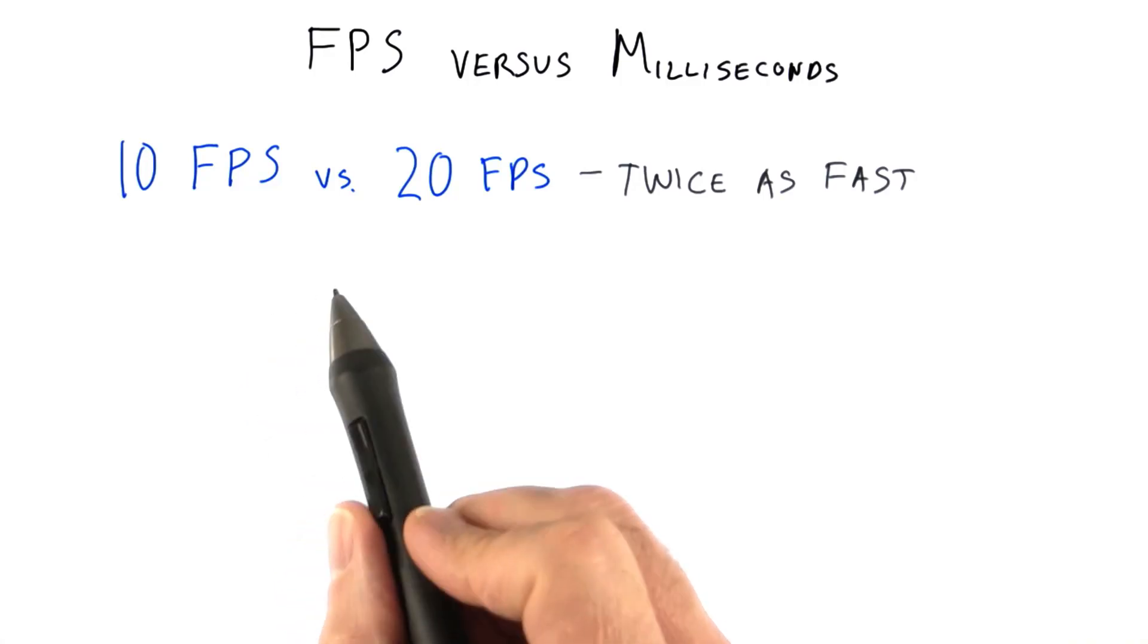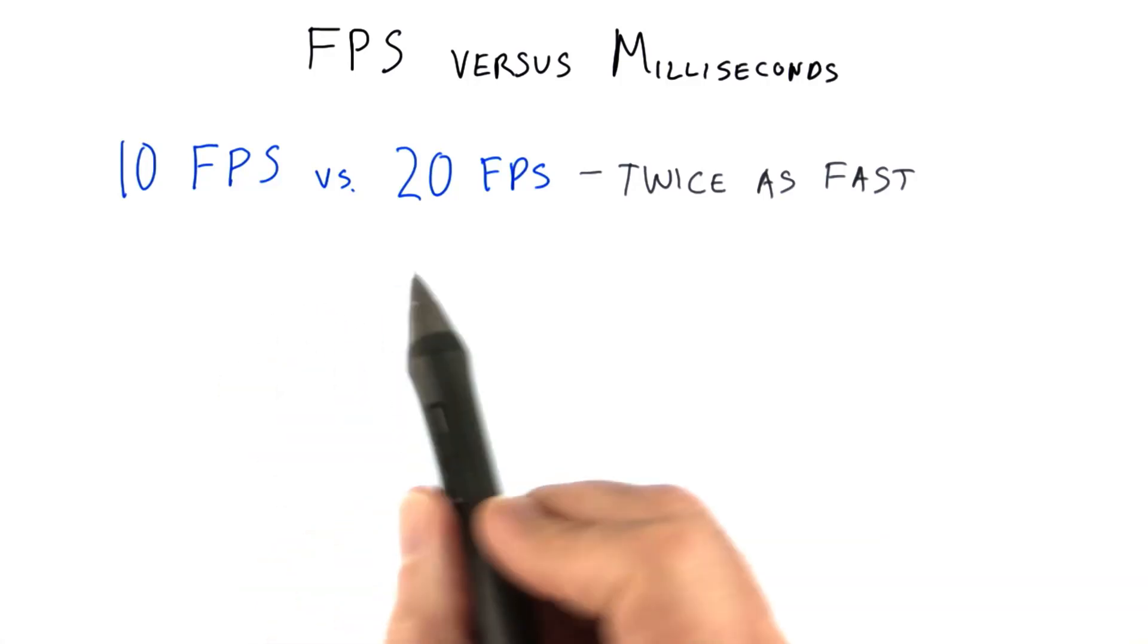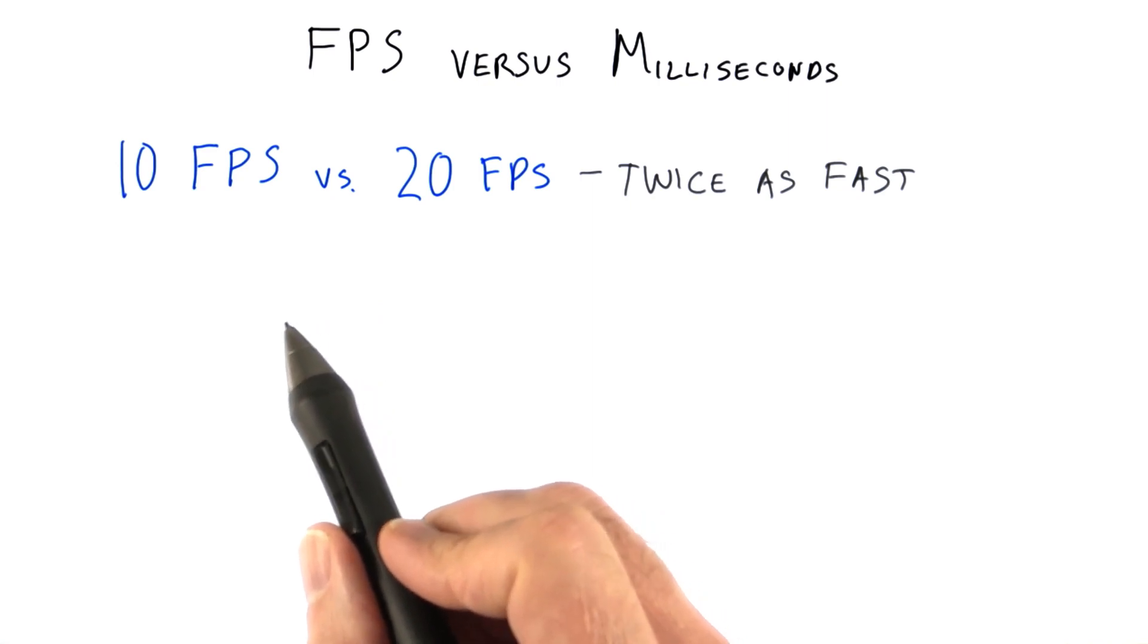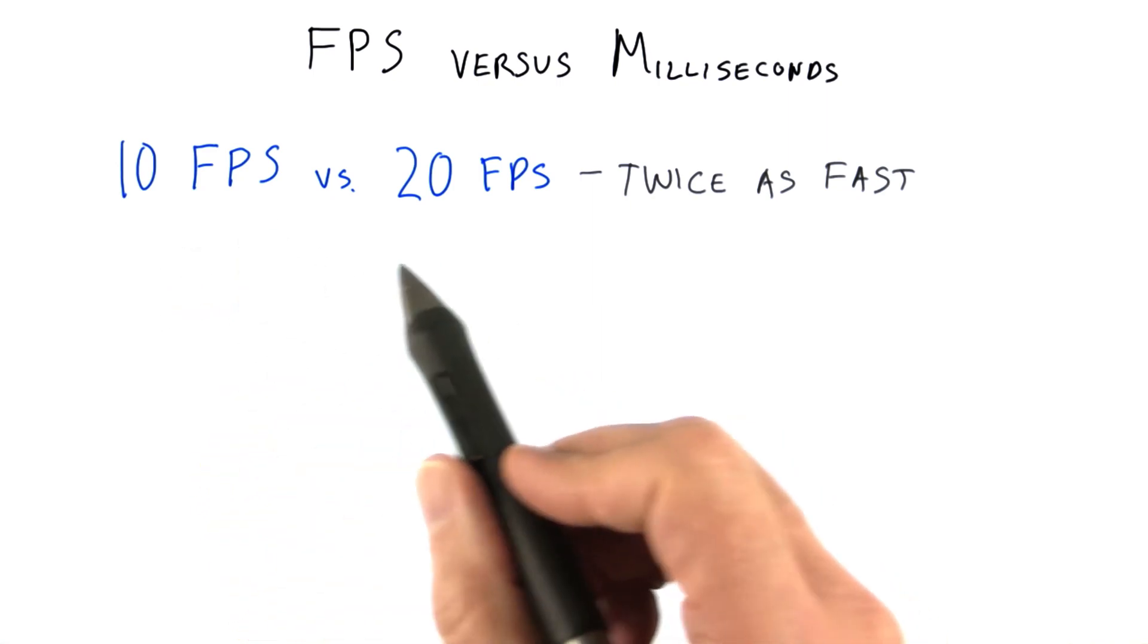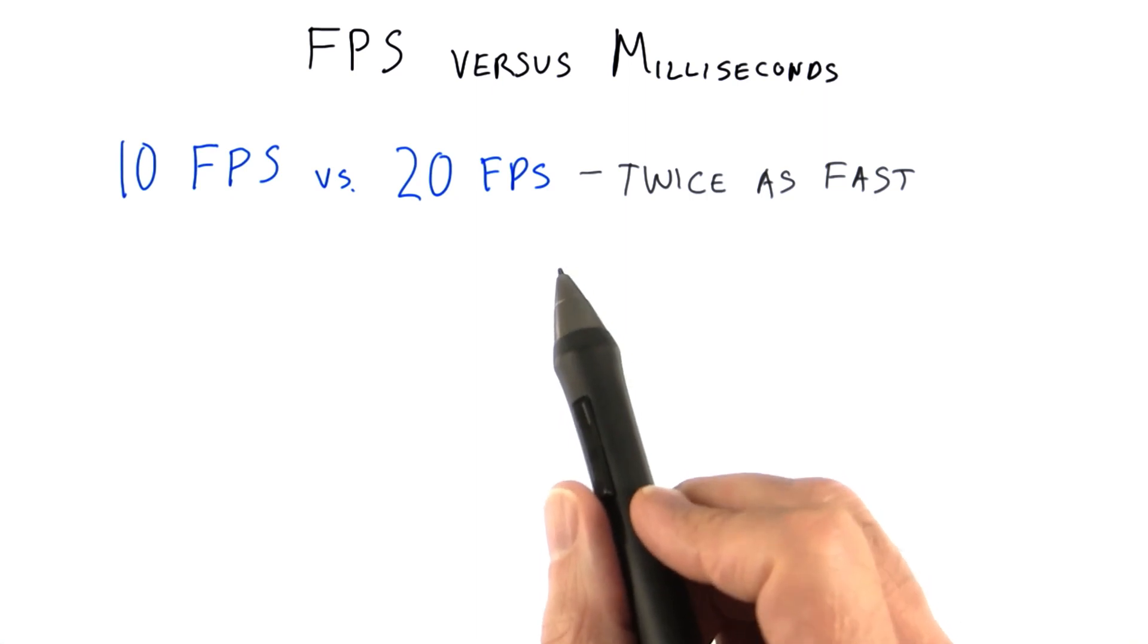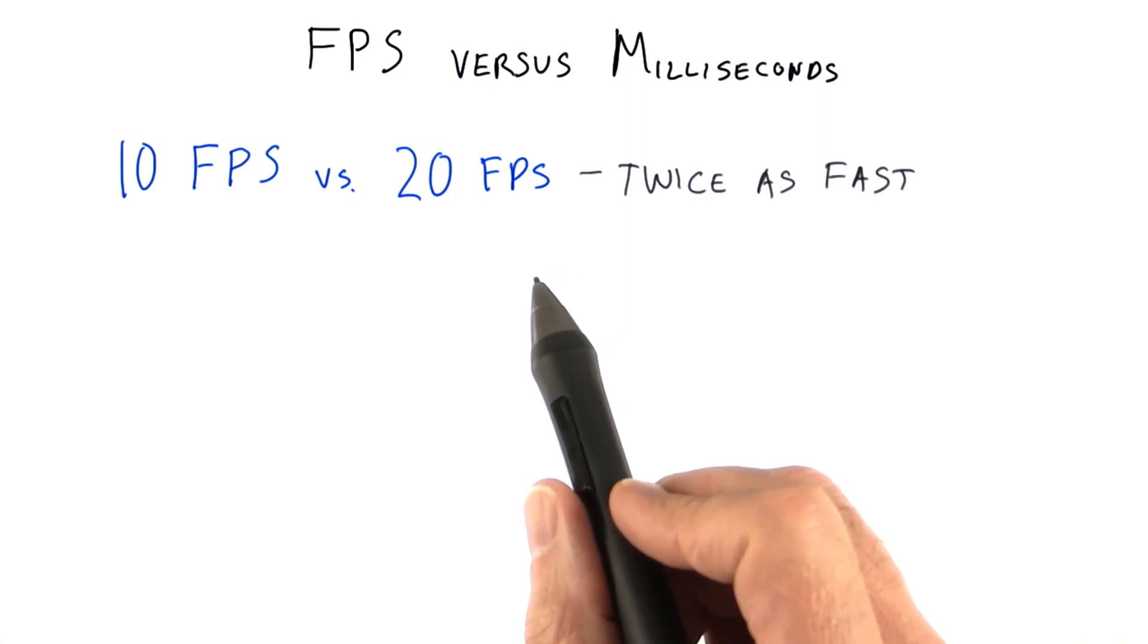Measuring frames per second is a common way to talk about an application as a whole. If an application runs at 10 frames per second on one system and 20 frames per second on another, we can truthfully say the second system is about twice as fast in this instance.